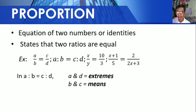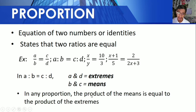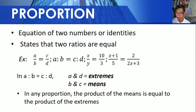In A is to B is equal to C is to D, A and D are called extremes, and B and C are called means. So in any proportion, the product of the means is equal to the product of the extremes.